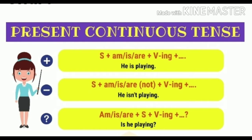Coming to the formation of the present continuous tense: for an affirmative sentence, the structure is Subject + is/am/are + verb + ing. For example, with a singular subject 'he,' we use 'is': 'He is playing.' For a negative sentence, the structure is Subject + is/am/are + not + verb + ing. For example: 'He is not playing' or 'He isn't playing.'